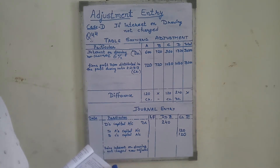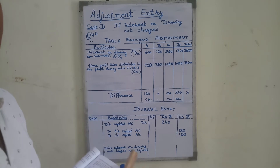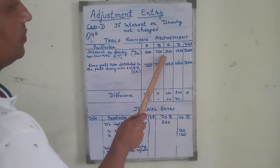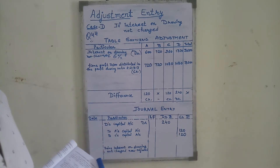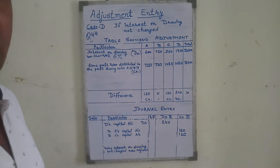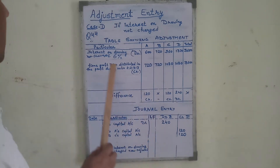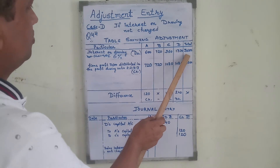First we calculate the whole year interest, then multiply by 6/12. Interest on drawings is charged for the average period of half a year because the date of withdrawal is not given. This is the firm's profit.